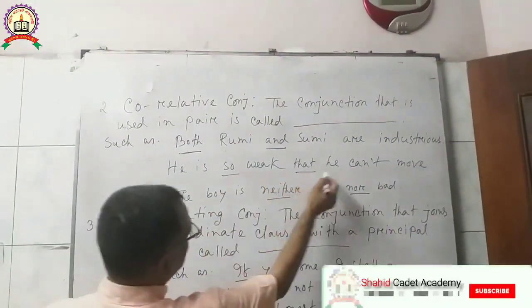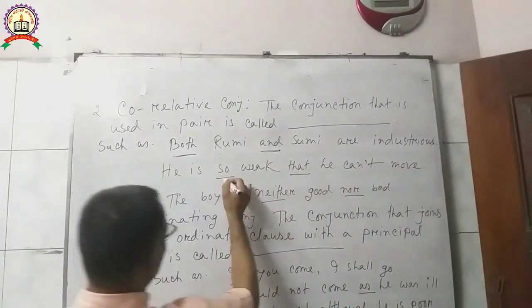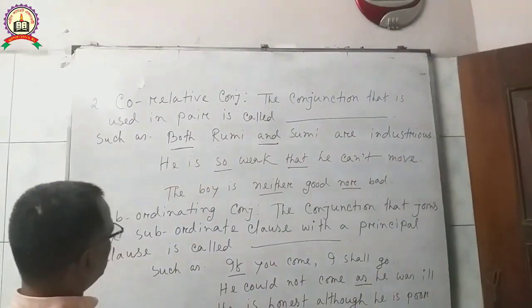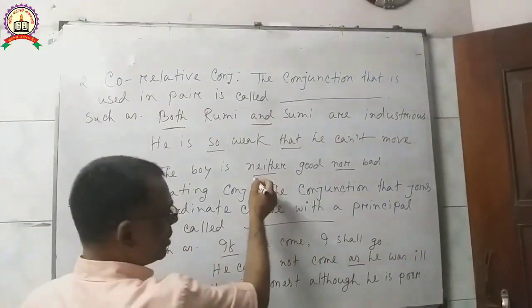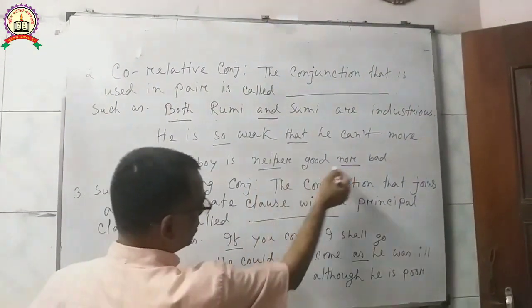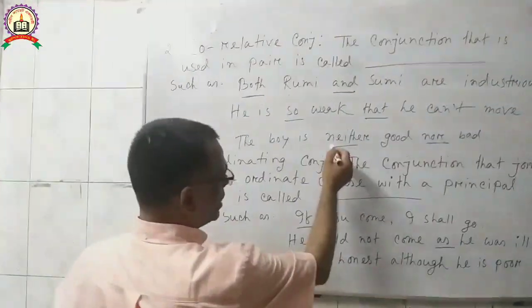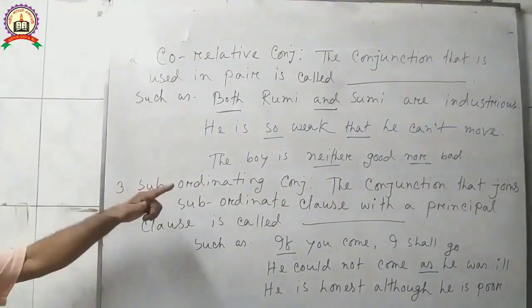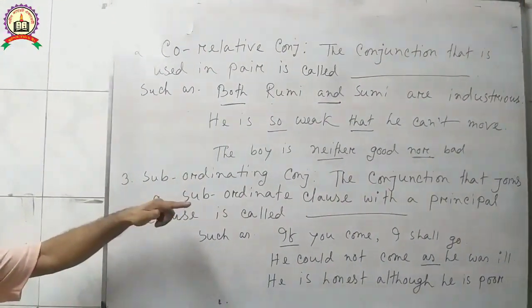Another example: 'He is so weak that he cannot move.' Here, 'so...that' is a co-relative conjunction. Also: 'Dhava is neither good nor bad.' Here, 'neither...nor' is used as a co-relative conjunction.